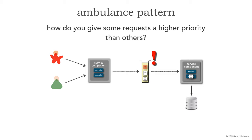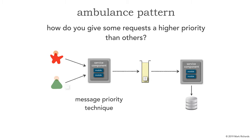There are a couple of ways of implementing the ambulance pattern. One that is not so good and one that's a lot better. The first technique is a message priority technique — leveraging message priority within the header of the message, which we can set to a numeric value or low, medium, or high. If we set the ones coming from the person in red to high and the rest to medium, normal requests come in, and now a high priority message comes in and notice it goes to the head of the queue.